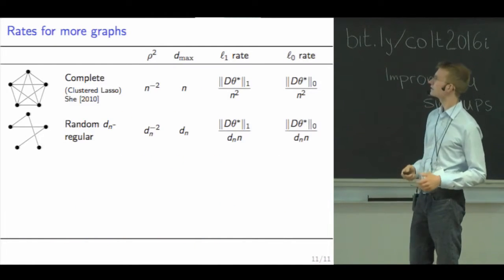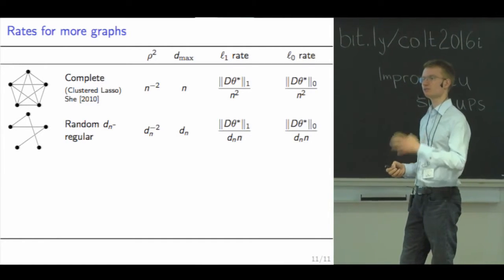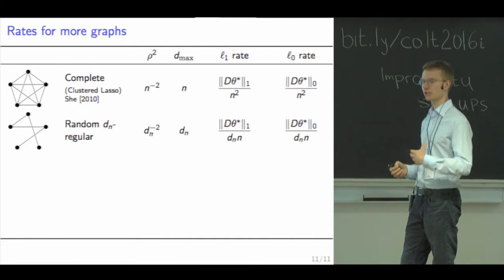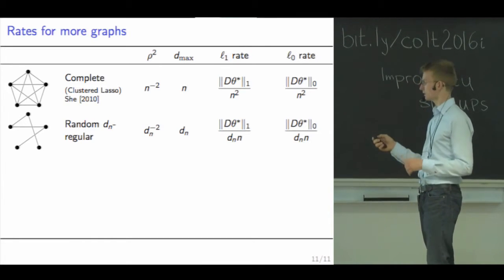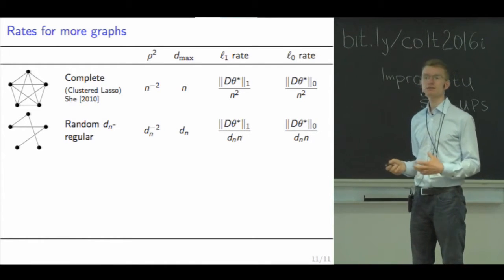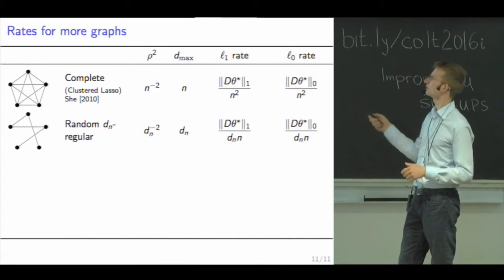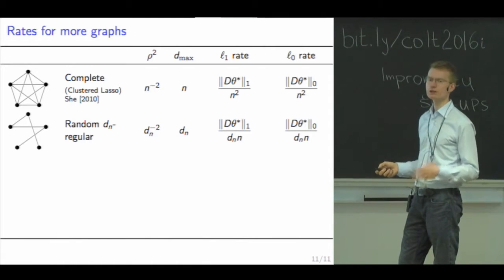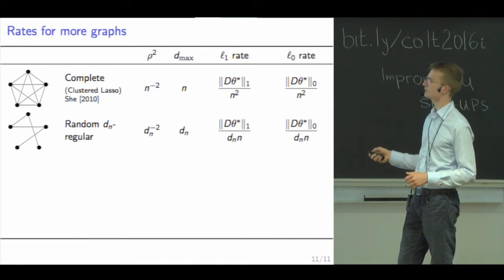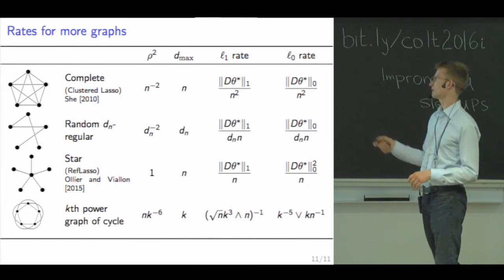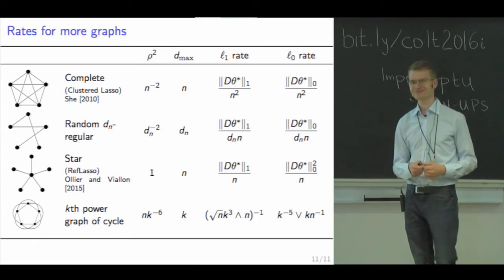Let's wrap up with more graph examples. The complete graph has been considered as a model when we have no prior information on the graph structure, and it gives a very fast convergence rate of one over n squared — however the total variation complexity term can be very large, potentially order n squared. We also consider random graphs as a way of sparsifying the complete graph, obtaining the same rates with degree d in both the complexity and denominator. Finally, we also get rates for the star graph and a power graph of the cycle, which interpolates between the path and the complete graph.